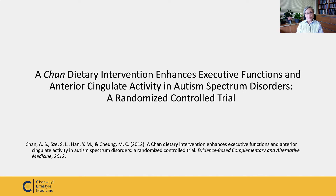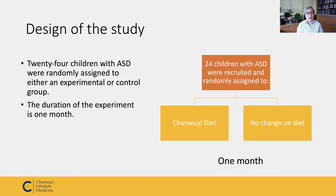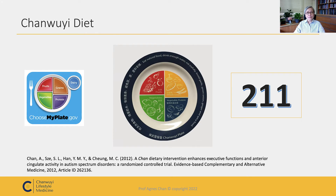The first experiment I would like to explain is the study of the Chan Wuyi diet. We have 24 children with ASD, randomly assigned to follow the Chan Wuyi diet or no dietary change for one month. The Chan Wuyi plate encourages a balanced diet: in every meal, about half of what they eat is vegetables and fruit, a quarter is whole grain, and a quarter is protein.